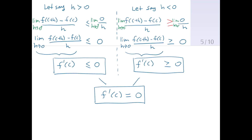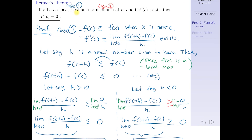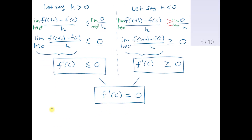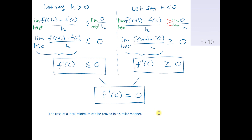This is the end of the case 1 proof. For case 2, the process is exactly the same, except we assume f has a local minimum at c. The only difference is that the inequality must be flipped because f(c+h) must be greater than or equal to the local minimum f(c). Otherwise everything is the same, and you'll end up with the same result. So the second case of a local minimum can be proved in a similar manner, and this proof is completely finished.